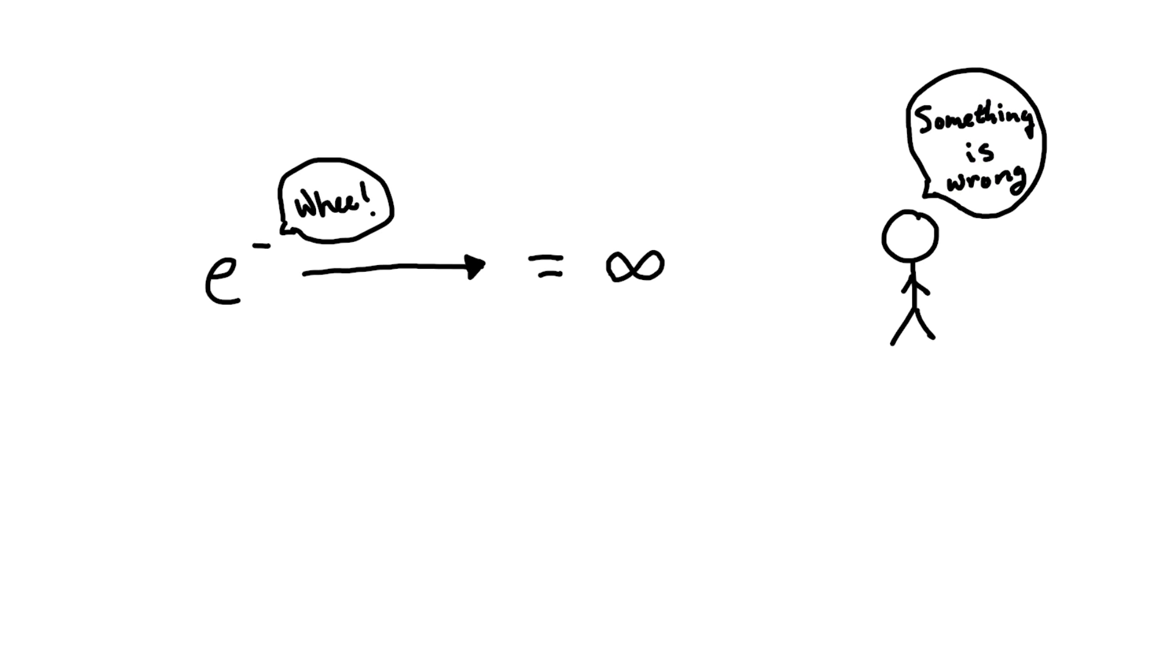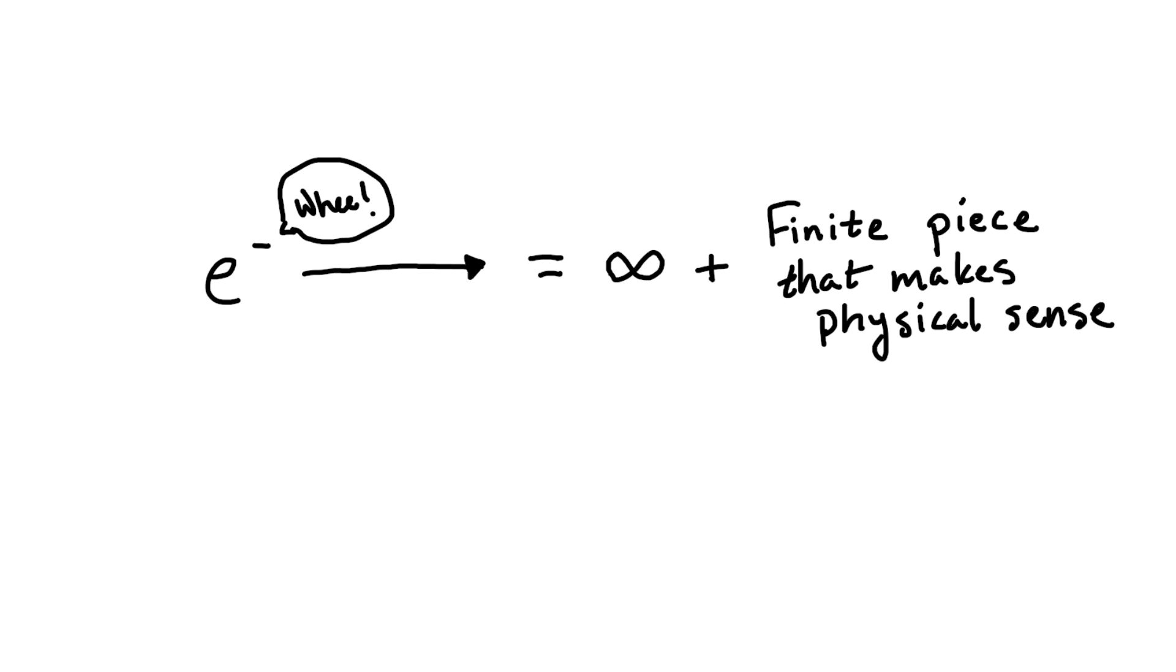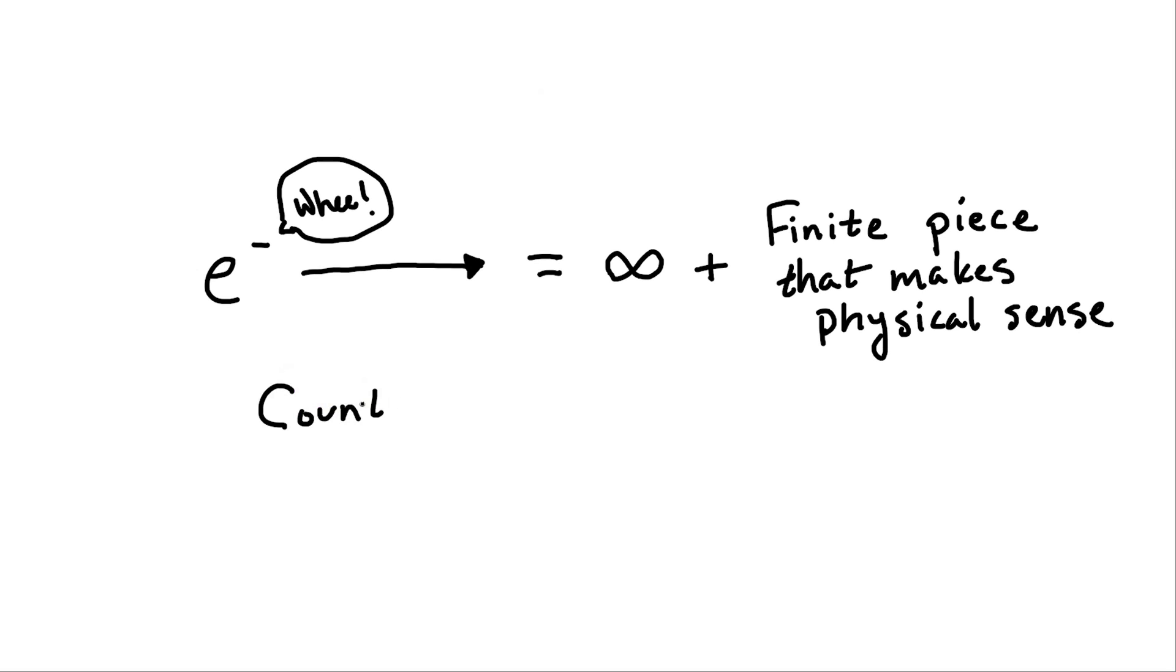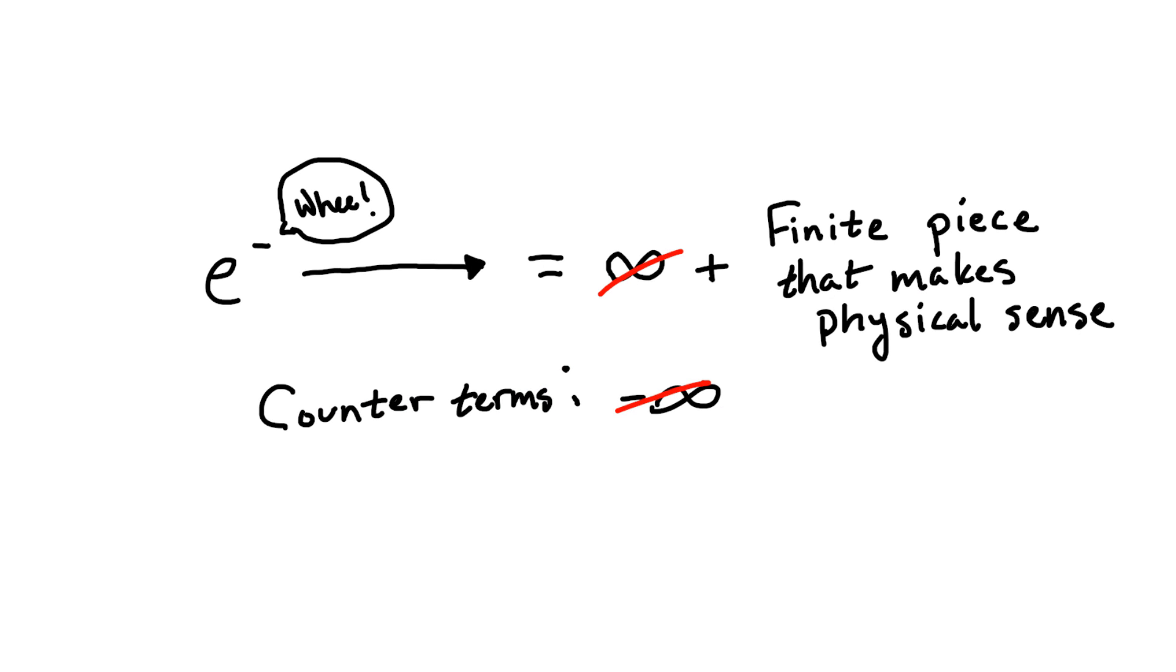As it turns out, infinities show up pretty frequently when doing particle physics calculations using quantum field theory. And this is a problem, mainly because the infinities show up where they really shouldn't, like for an electron just flying through space. The nice thing is, though, that for well-behaved theories, we can usually separate out these infinities like we did before with the factor of 1 over a squared. We can then add in counterterms in the equations that describe the physics to just cancel off these divergences and leave us with only finite contributions to the physical processes.